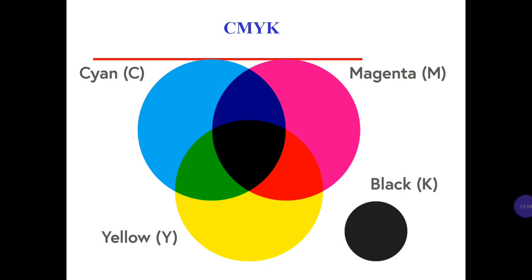In CMYK: C is cyan, M is magenta, Y is yellow, and K is black.